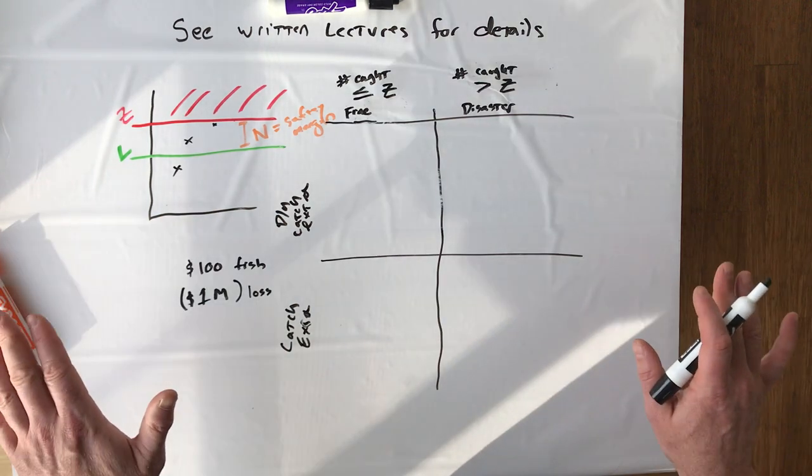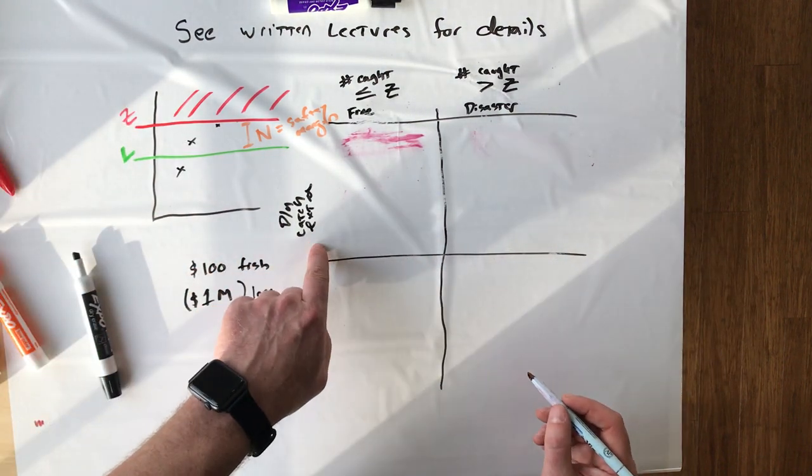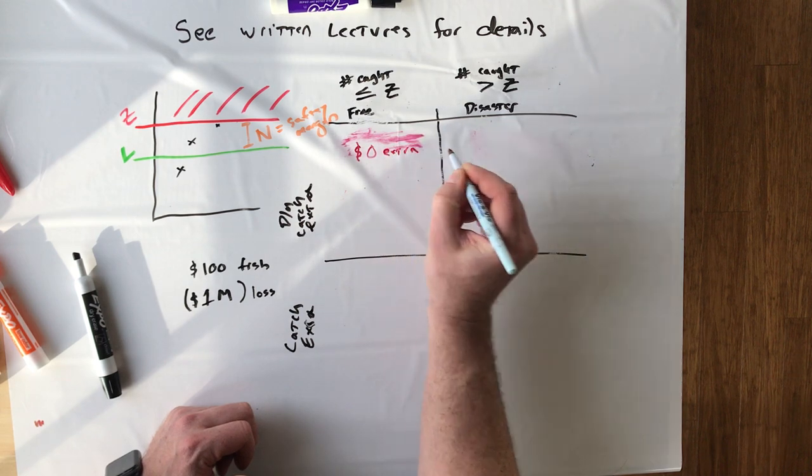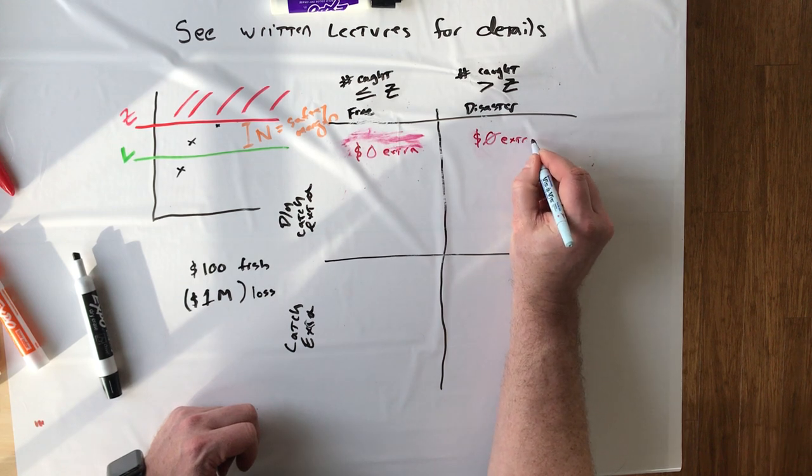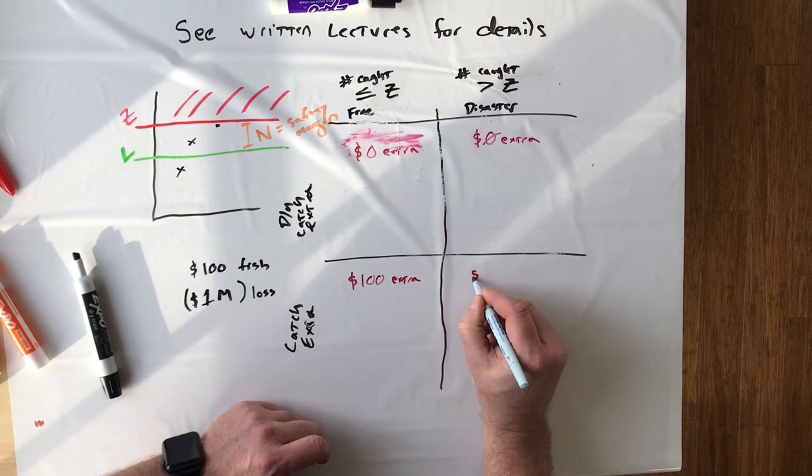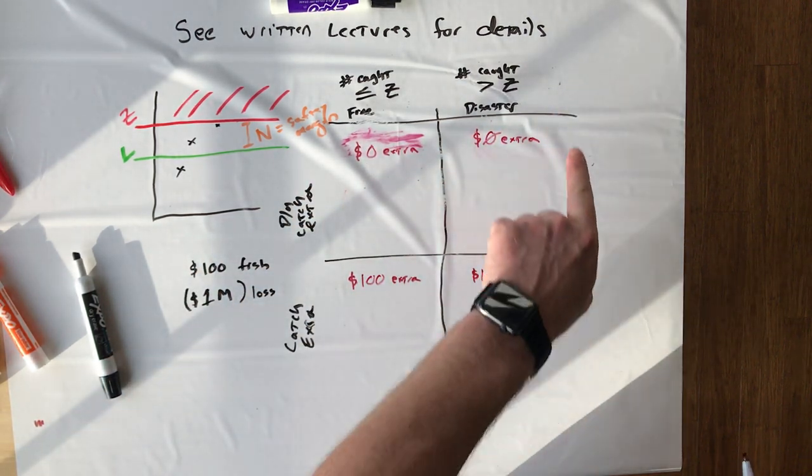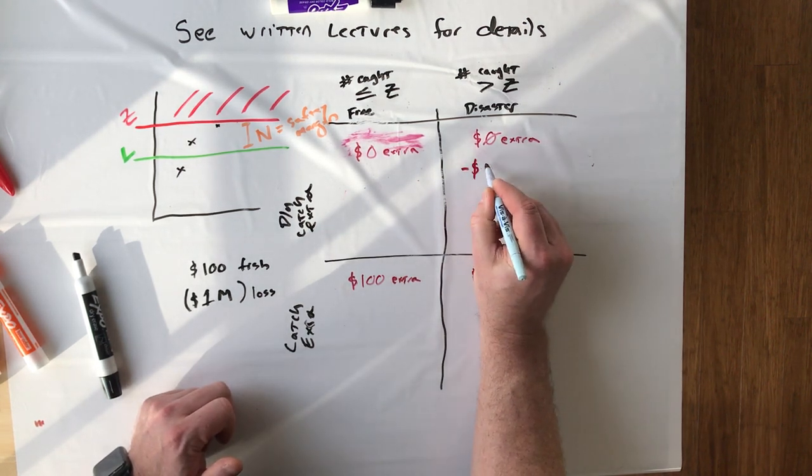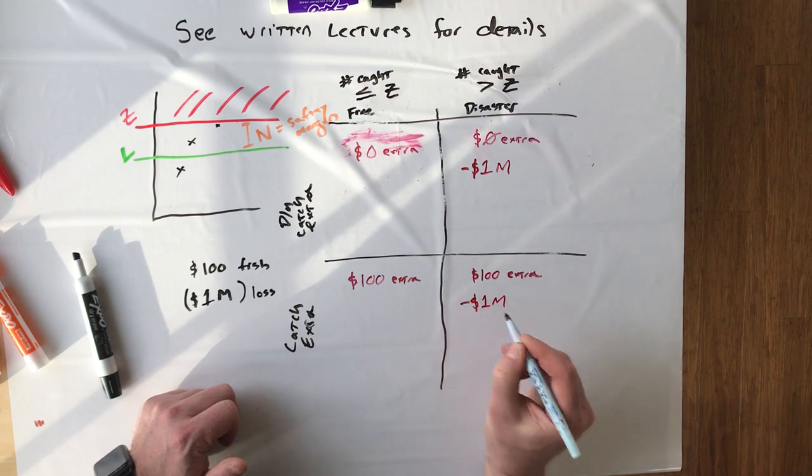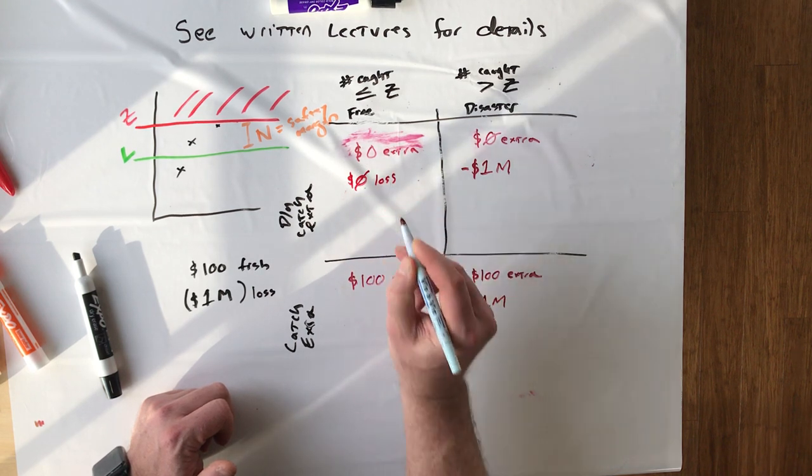So our top left box is going to be the situation in which you don't catch the extra fish and everything is fine. The bottom left box is where you catch the extra, everything is fine. Top right, you don't catch the extra and there's a disaster. And the bottom right is going to be where we catch extra and there's a disaster. So now just to fill this out, we just take these numbers and plug them in. On the top row, you're not catching any extra fish. So there's no change on that. Zero extra. You're still getting your normal catch. You're still making your normal fishy bucks. But you're not getting any extra. And down here you catch the one extra fish. So you get an extra hundred bucks. And then on this column here, there's going to be the disaster. So the upper right box, you are losing a million bucks. And in the bottom right box, you are also losing a million bucks. And in the left column, everything's fine. So there's no loss.